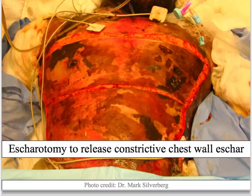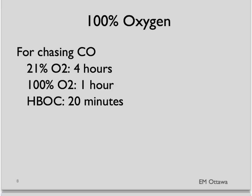To fix a tight eschar in the chest, as we talked about before, an escharotomy is done to release the constrictive chest wall so the chest can rise when the patient is being ventilated. In terms of carbon monoxide toxicity, we put the patient on 100% oxygen to decrease the half-life of the carbon monoxide in the body. This can either be done at normal pressure or with higher pressure in a hyperbaric oxygen chamber.